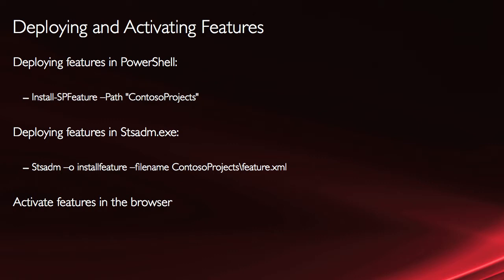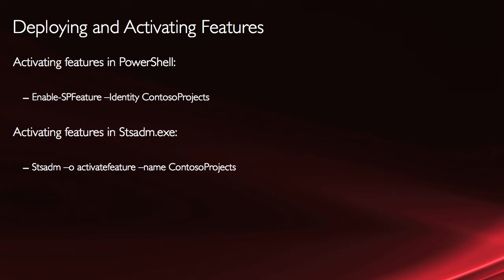You can activate the features in the browser. There's a page in Central Administration where you can see all the features and choose to activate or deactivate them. However, you won't see a feature there until you deploy it using PowerShell or STSadm. You can also activate features in PowerShell or STSadm if you prefer.